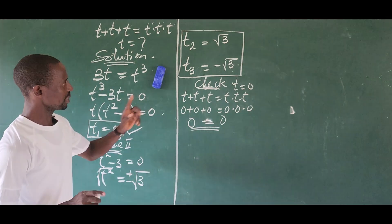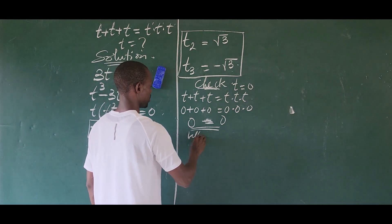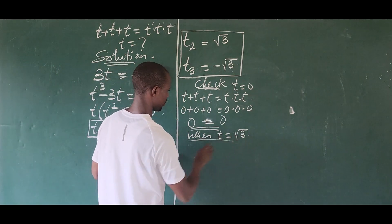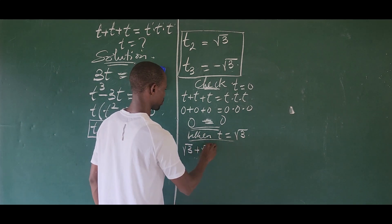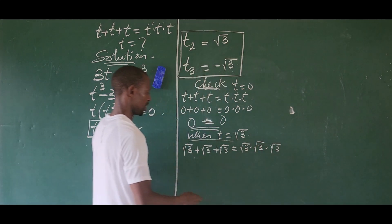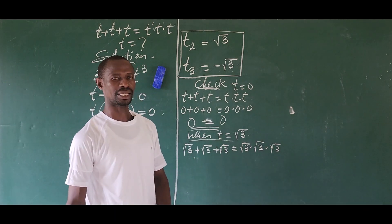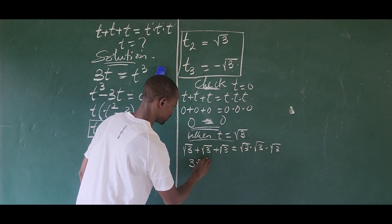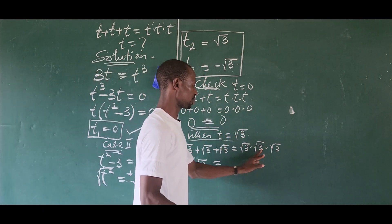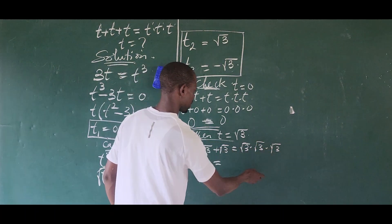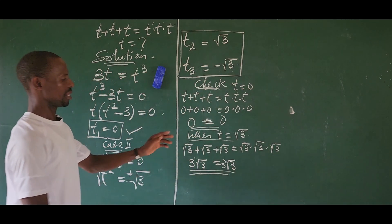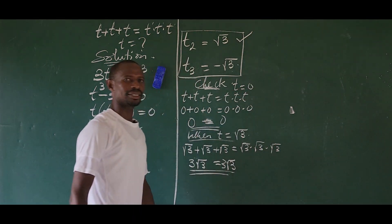Now checking t₂: when t equals square root of three, we have √3 plus √3 plus √3 equals √3 times √3 times √3. The left side gives three root three. On the right, √3 times √3 equals three, times another √3 gives three root three. So three root three equals three root three — confirmed.